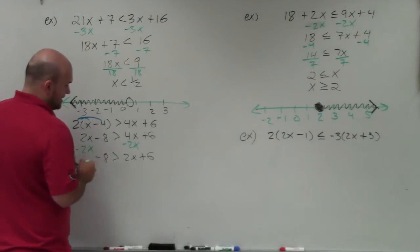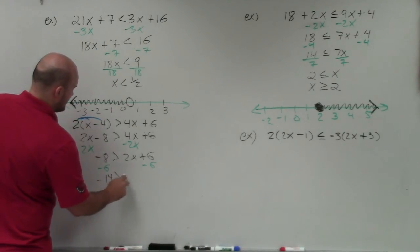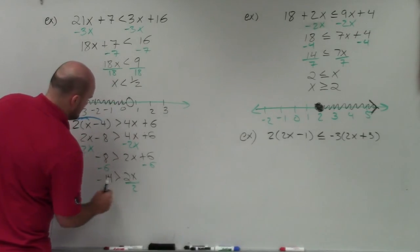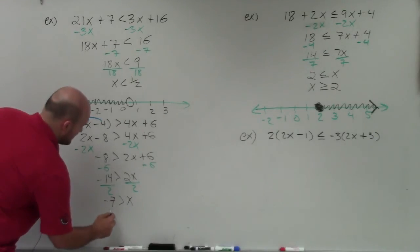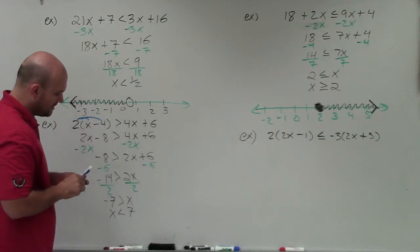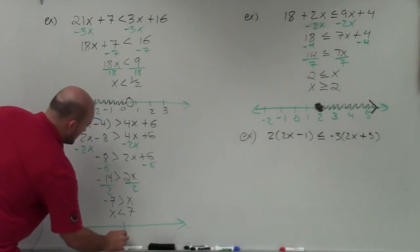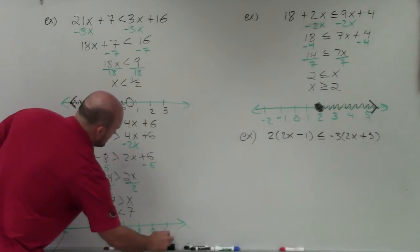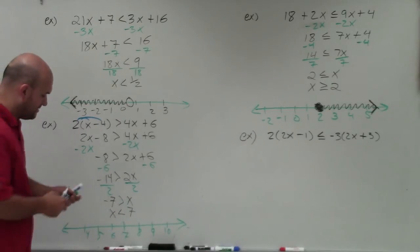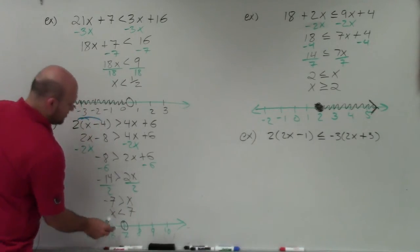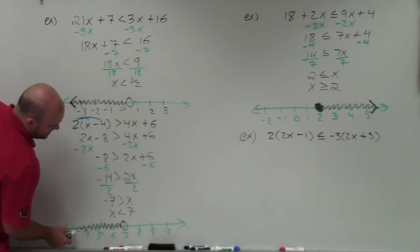Now I have negative 8 is greater than 2x plus 6. I use my inverse operations: my x is being multiplied by 2 and added by 6, so I subtract 6 on both sides. That gives me negative 14 is greater than 2x. Divide by 2, and I get negative 7 is greater than x, or rewritten: x is less than negative 7. I'll create my number line starting at negative 7. It's less than, so that's an open circle. All values less than negative 7 are to the left, so I shade to the left with a nice big arrow.